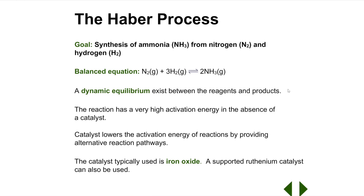A catalyst is a chemical which serves as a binding site on which a reaction can occur. This makes it easier for the chemicals to react. It decreases the amount of activation energy that is needed for the reaction to get started, which speeds up the reaction. In the Haber process, an iron oxide catalyst is usually used. Ruthenium can also be used as a catalyst for the Haber process.